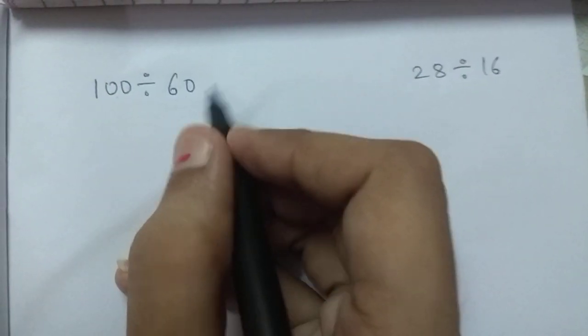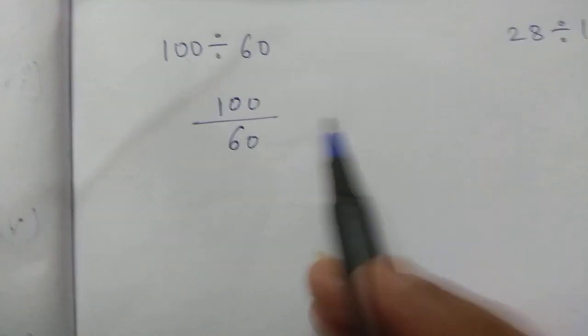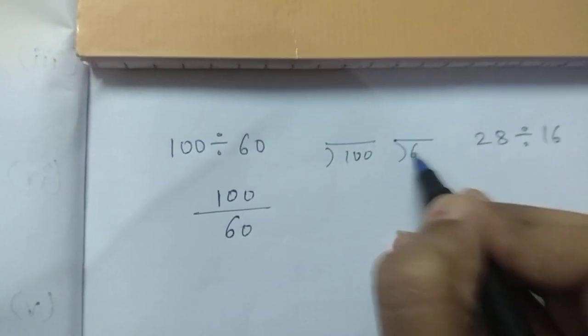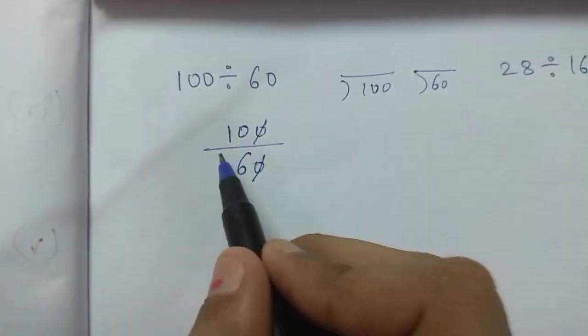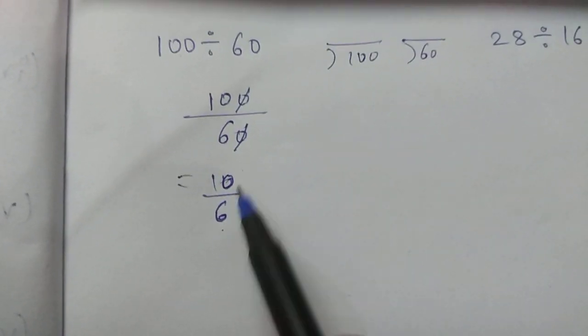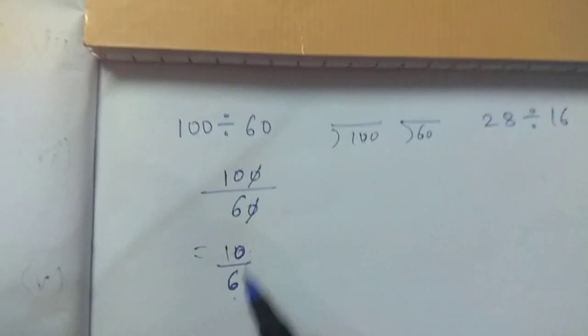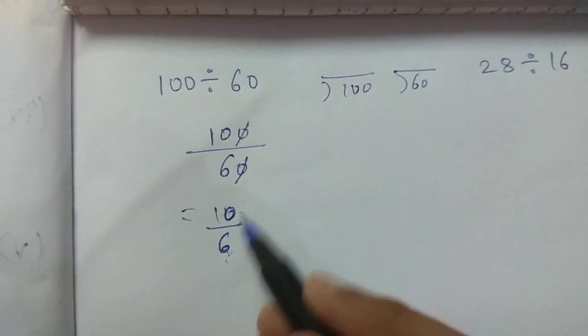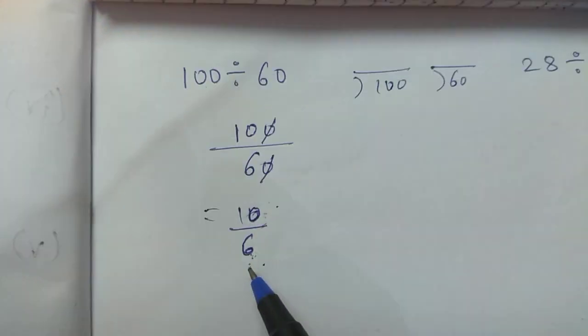First is 100 divided by 60, so we are going to write 100 in numerator and 60 in denominator. Now remember that whenever we have to divide a fraction, there are 2 methods. You can divide in this way, right? Or simply what we can do is we can cancel 1 from 10. Now the number which remains here is 10 upon 6. Now 10 upon 6, what is the same divisor of 10 and 6?